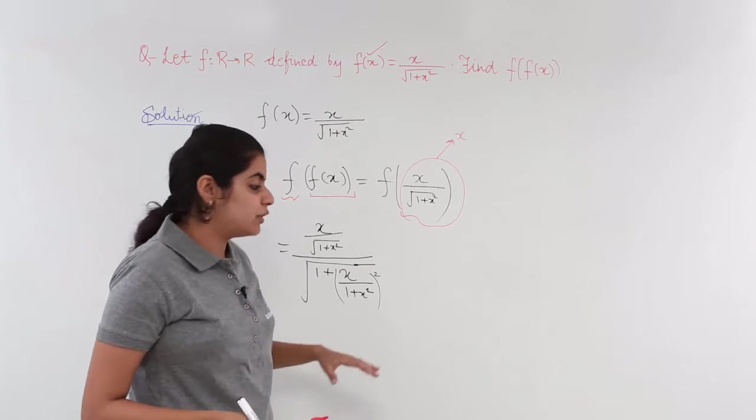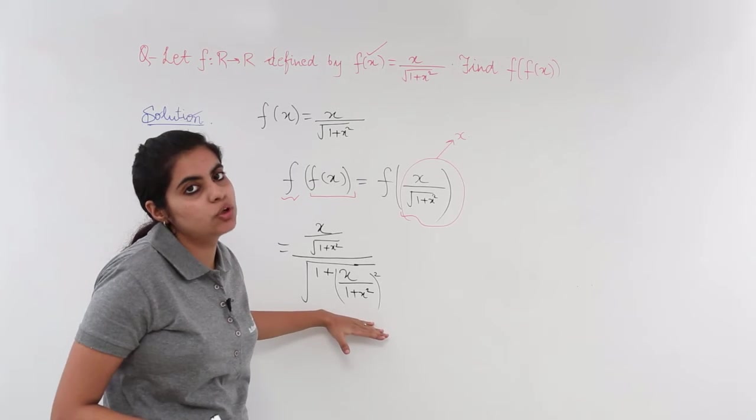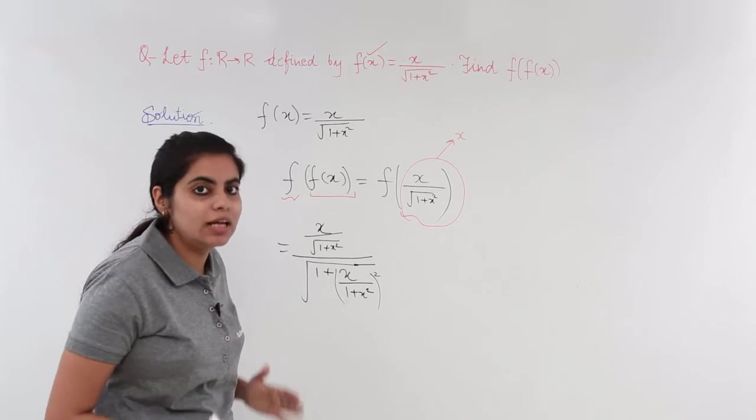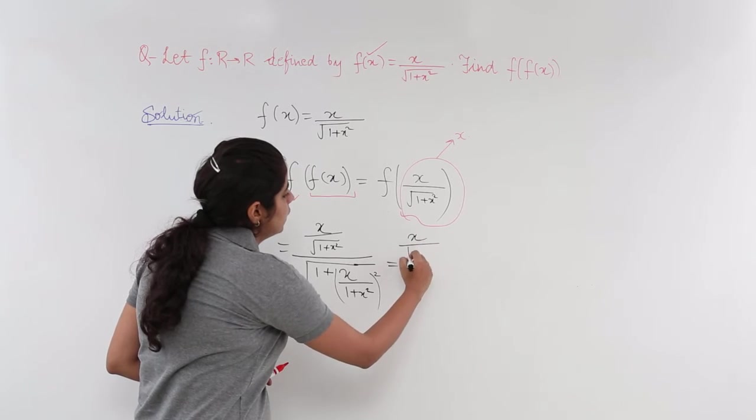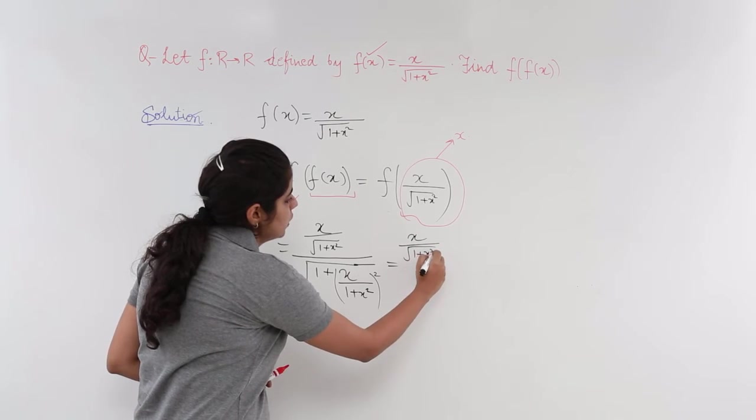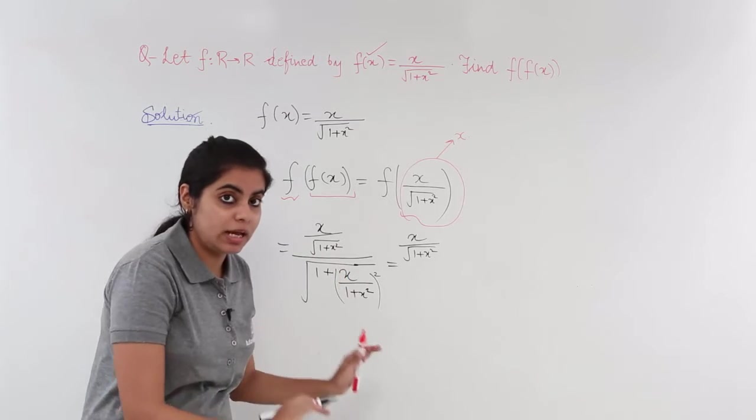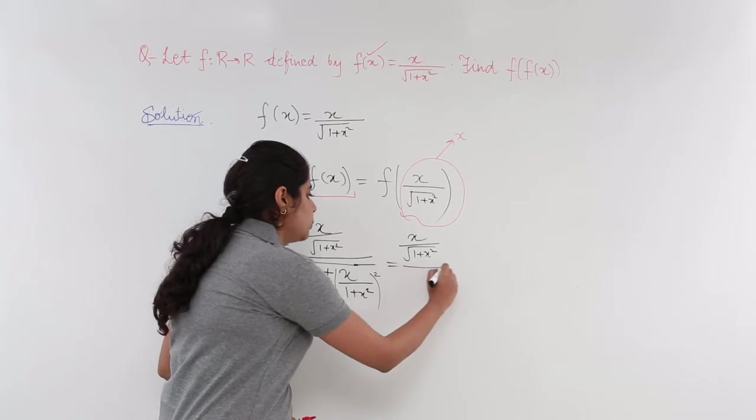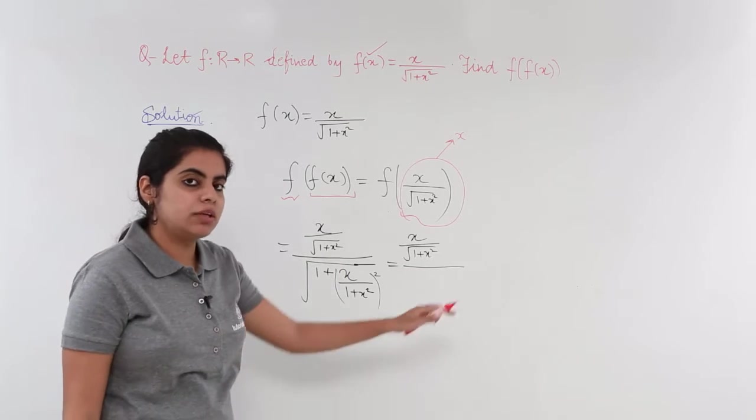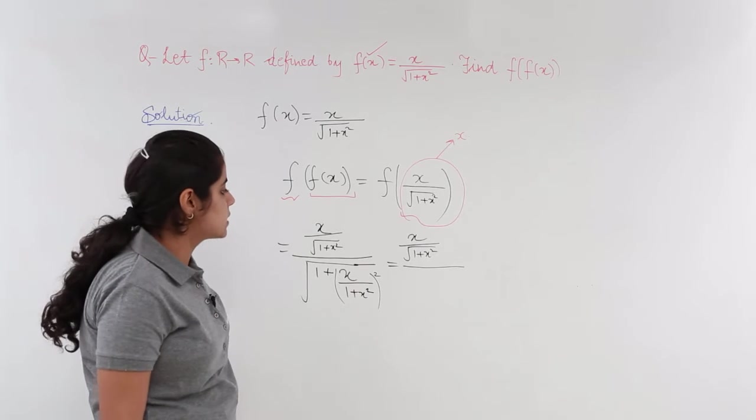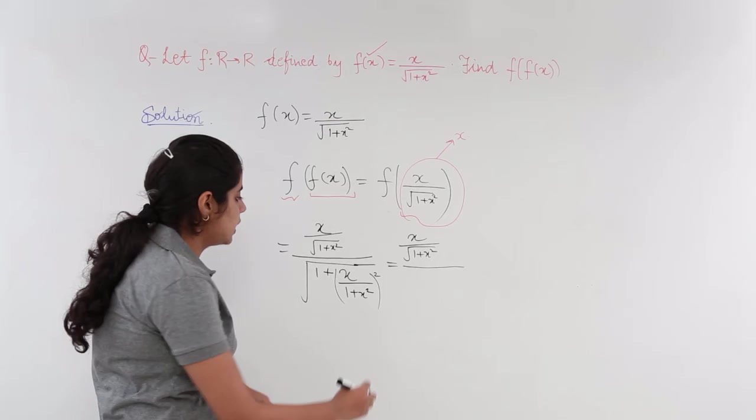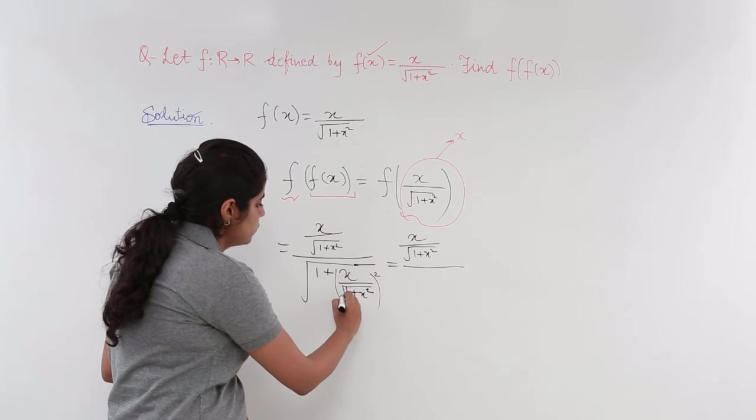Now, what is left is we are left with only the simplification of the denominator. Rest all is already done. So, let us simplify the denominator. The numerator does not need to be changed. Let it be kept as it is. We need to put upon sign. x square upon under root 1 plus x square was the story. So, this under root 1 plus x square does not change.